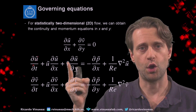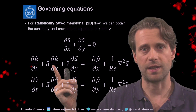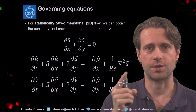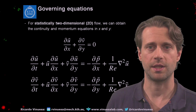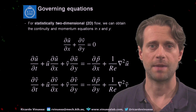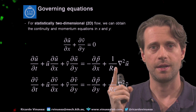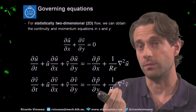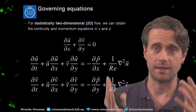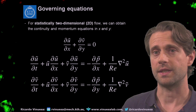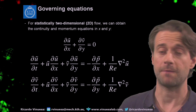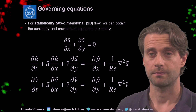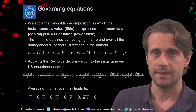Remember the first term would be the time derivative — the unsteady term. Then we have the nonlinear terms, which have to do with the convection, the pressure gradient, and then the viscous term, which has to do with the Laplacian of the velocity. And this Reynolds number term here is connected with nu — the viscosity — which leads to the viscous dissipation of the fluctuations in the flow.